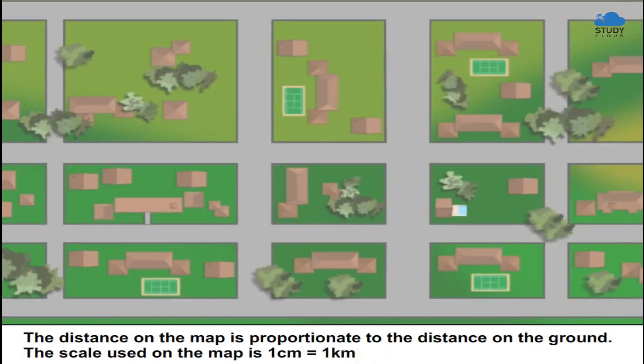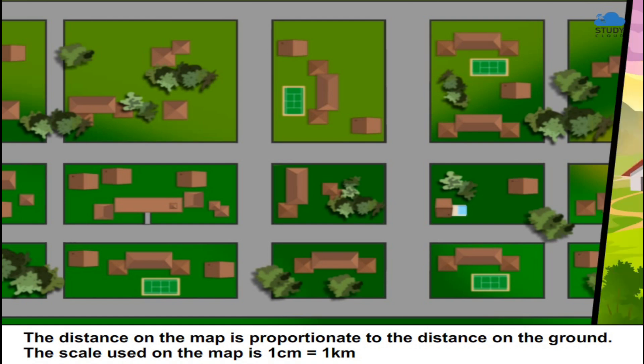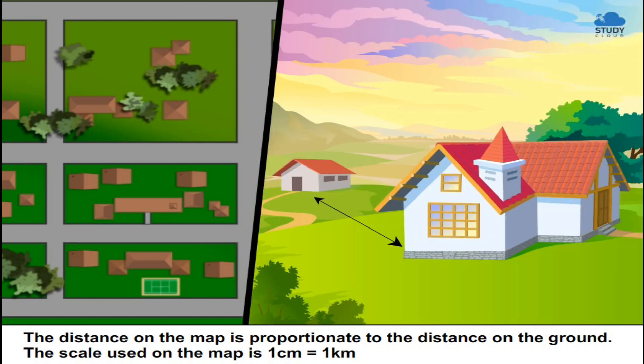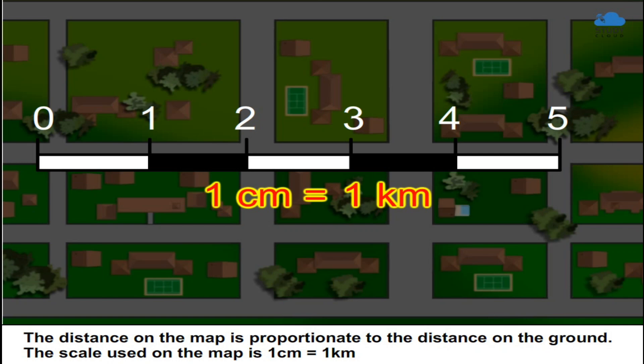The distance on the map is proportionate to the distance on the ground. The scale used on the map is one centimeter equals one kilometer.